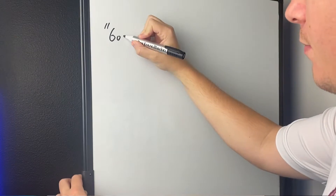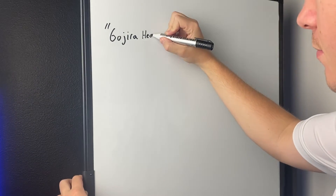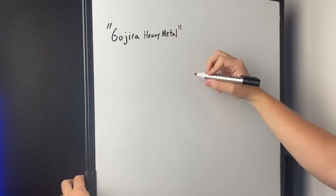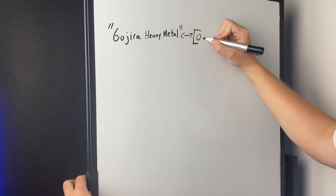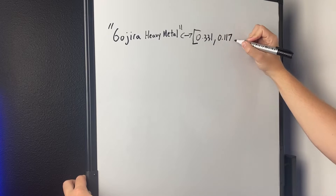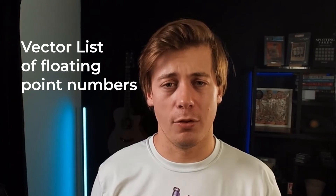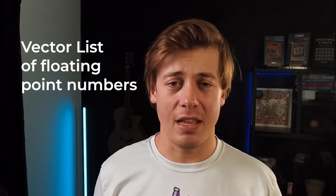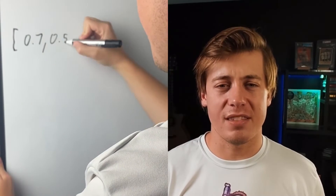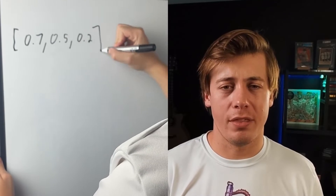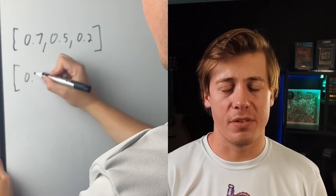You can change your text from one form into an embedding, which is a vector — a list of floating point numbers. Those numbers inside the embeddings serve a purpose.